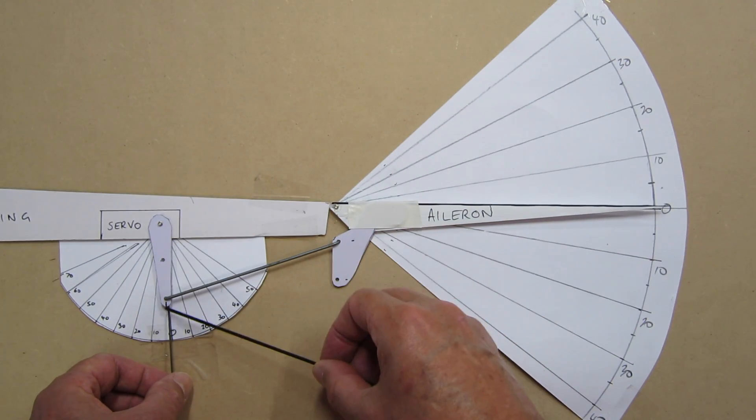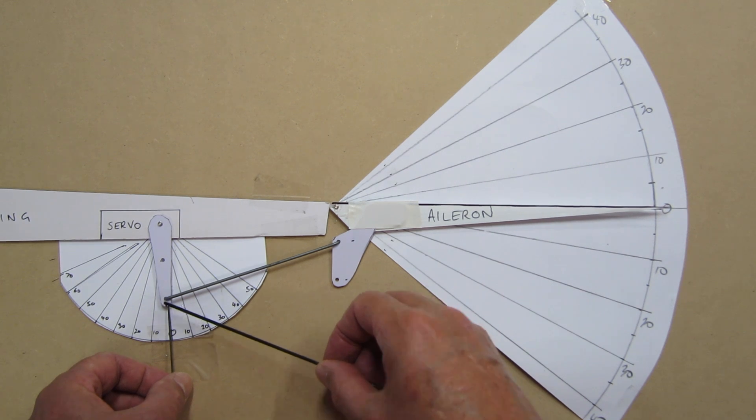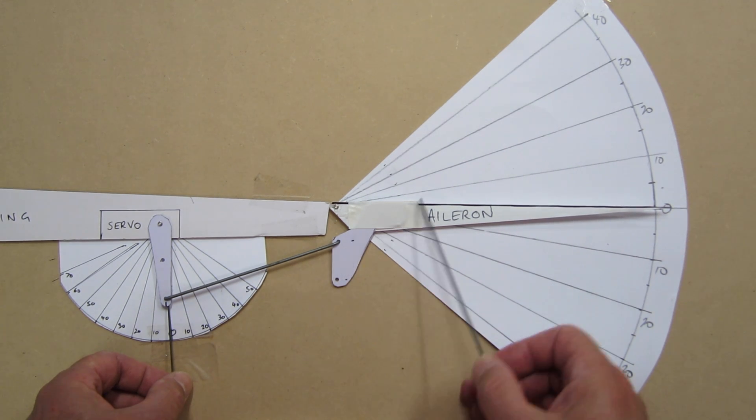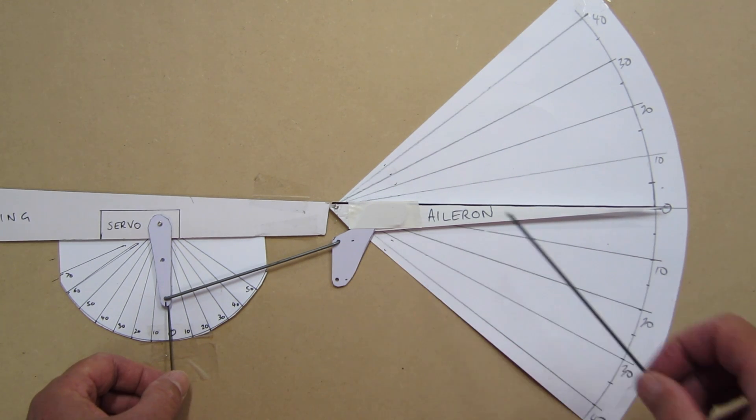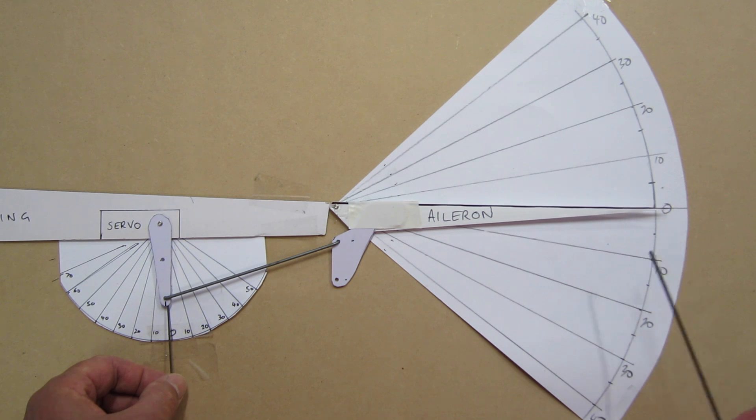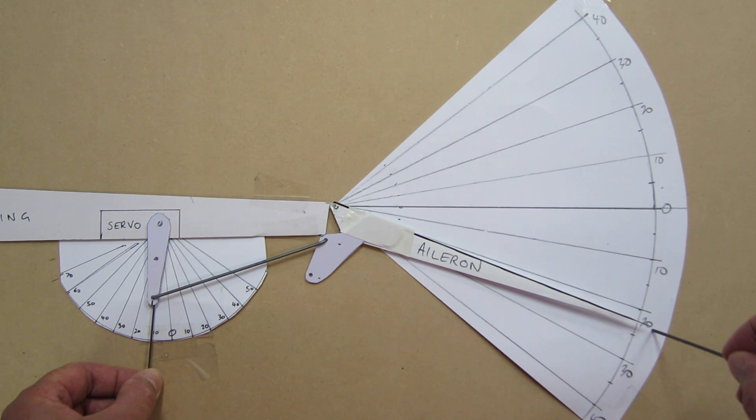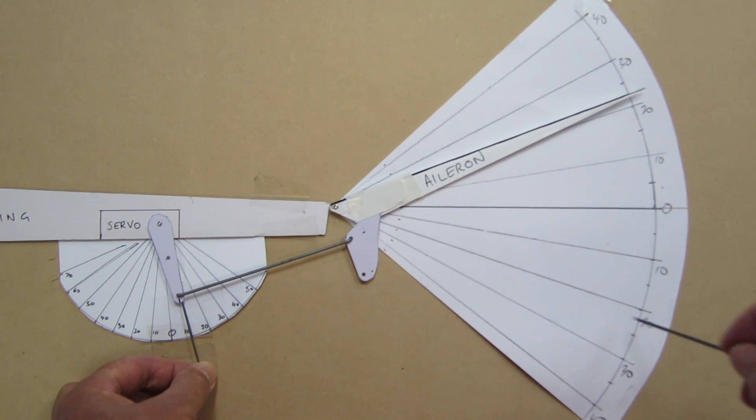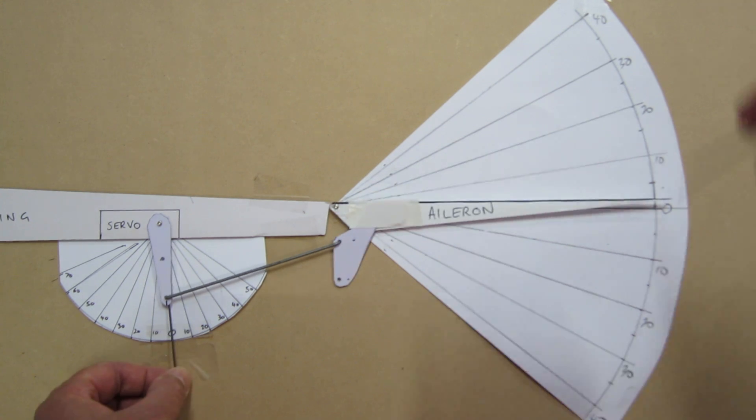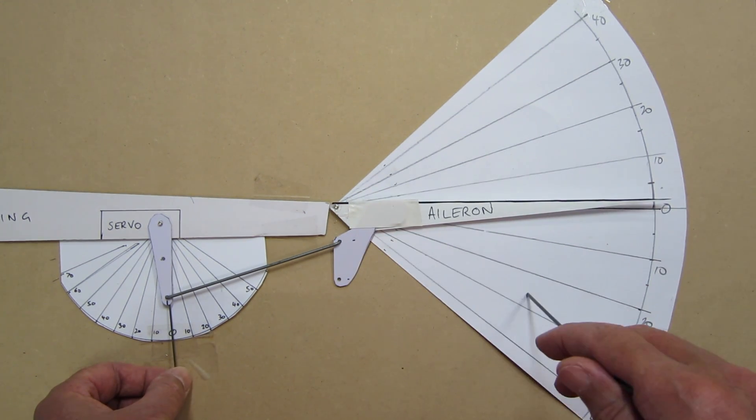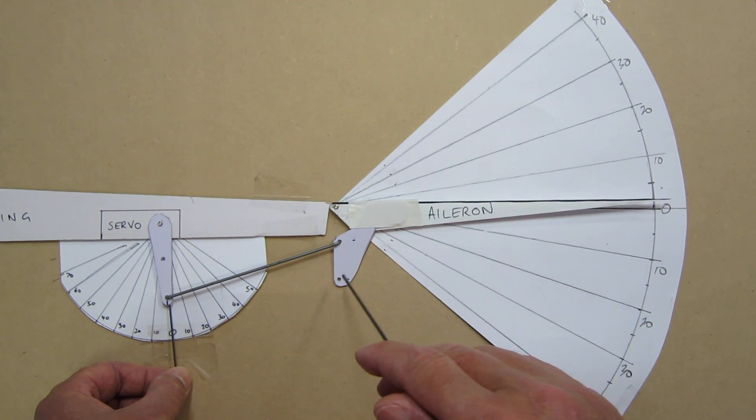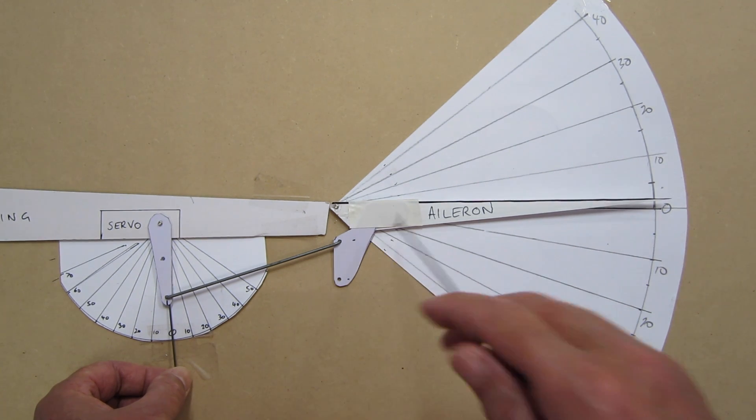So now I've moved the push rod back to the outer hole on the servo arm, but left it on the inner hole on the aileron control horn. Let's see, it will only go out to 10 degrees on the servo with this one, and it goes to 20 degrees down on the aileron. 10 degrees on the servo, and it's up 20 degrees on the aileron. So that increases the throws when you have the push rod on an inner hole on the aileron.